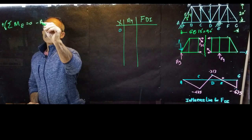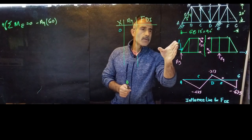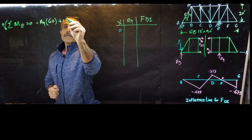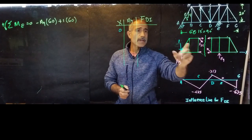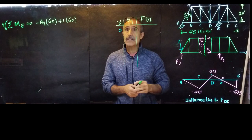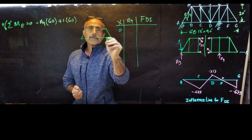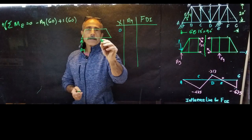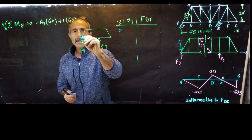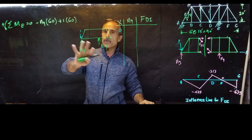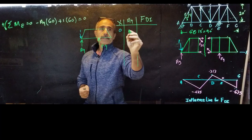So it's minus Ay times 60, and the other load is one, which is positive — one times 60. That's all we have when looking at the whole truss: two supports and the applied load. In reality, we have Ay here, Ey here, and the unit load applied at x equals zero. Setting the equation equal to zero, Ay comes out to one.